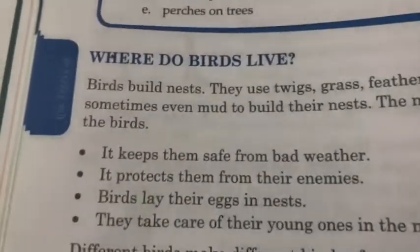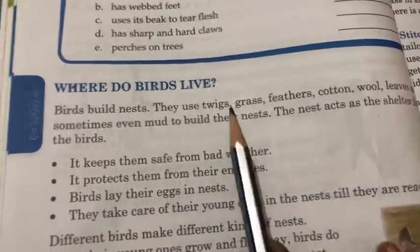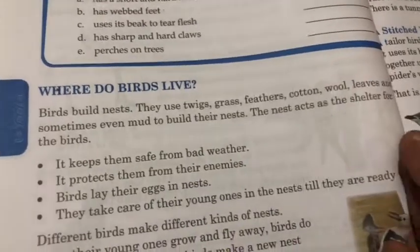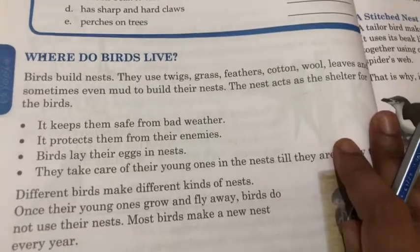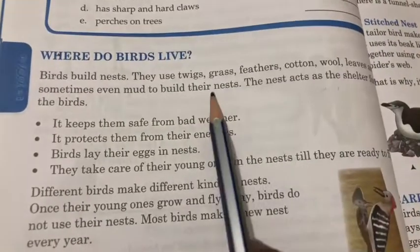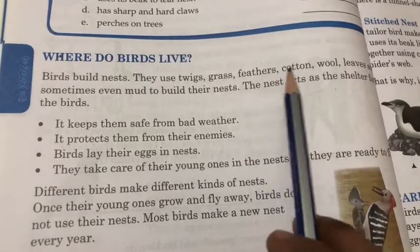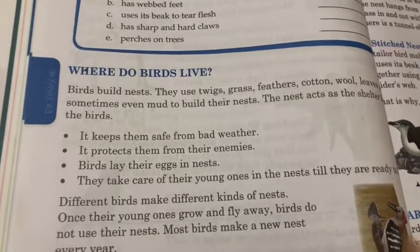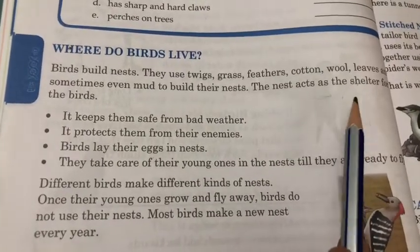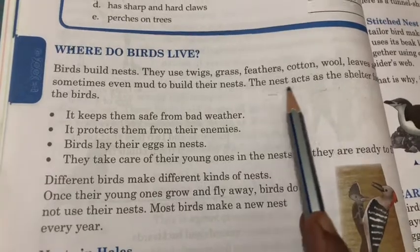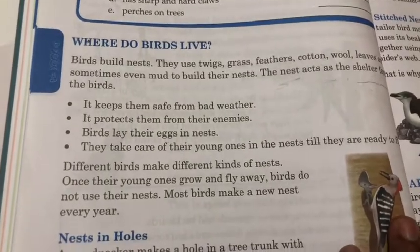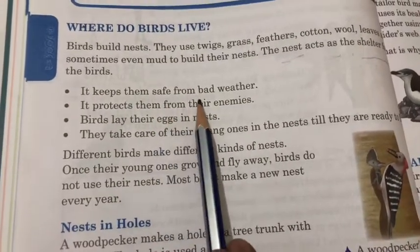Where do birds live? Birds build nests using twigs, grass, feathers, cotton, wool, leaves and sometimes mud. The nest acts as shelter for the birds. It keeps them safe from bad weather.